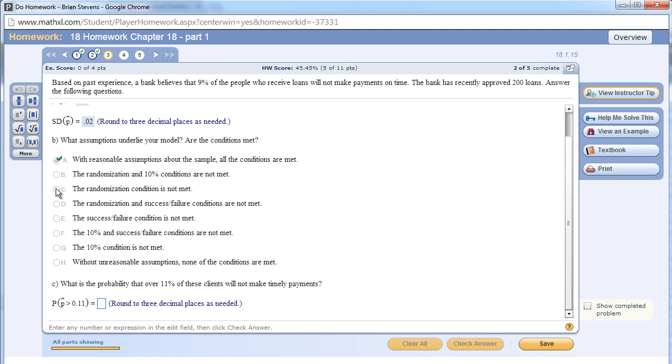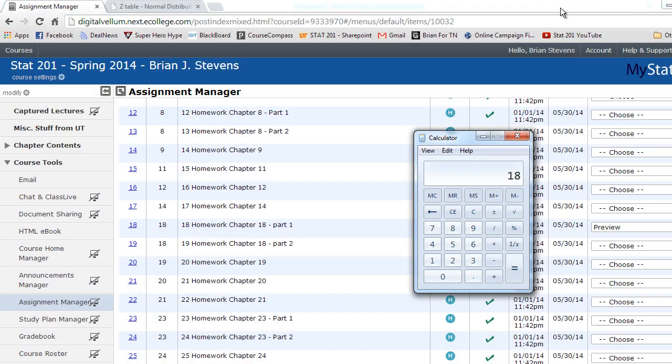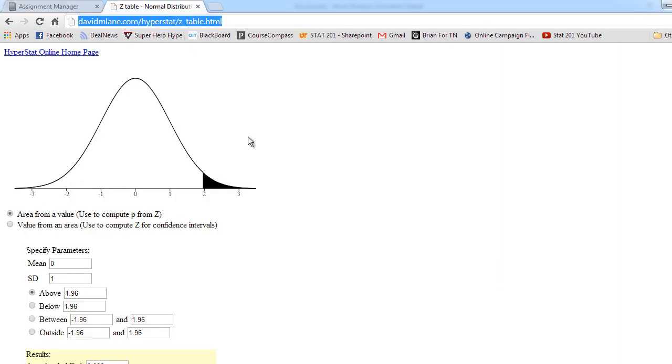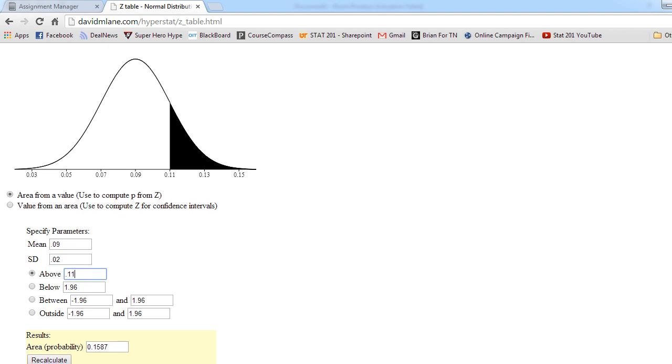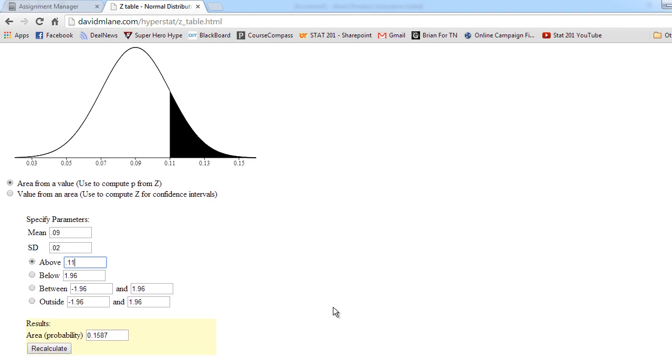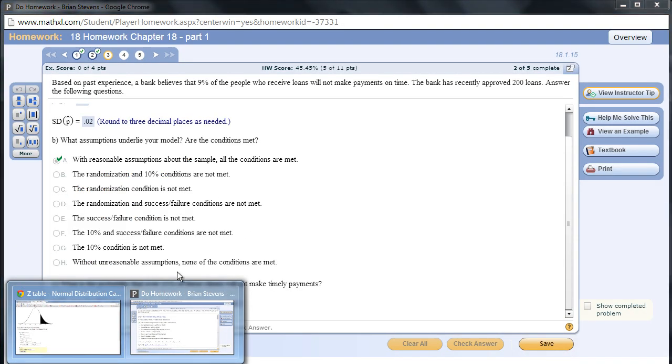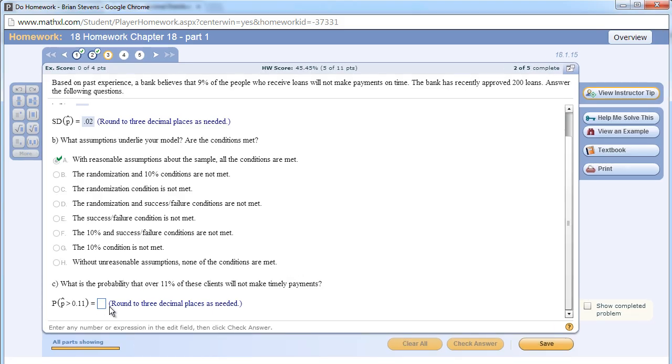What is the probability that over 11% of people will not make a payment on time? Here is where we have to go to the David M. Lane applet. Let's use the applet. This is the David M. Lane normal applet. I'm going to put in our model right here: 9% and 2%. With this in mind, we want to see above 11%. So the probability of above 11% is 0.1587. Going back to our problem, let's input that answer. Round to three decimals: 0.159.